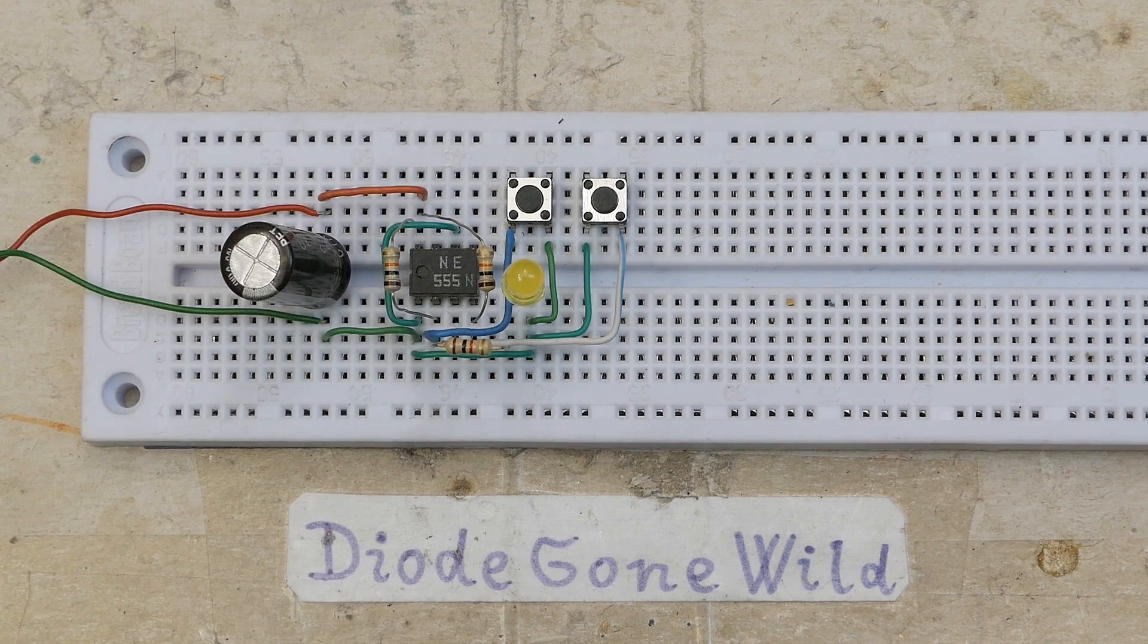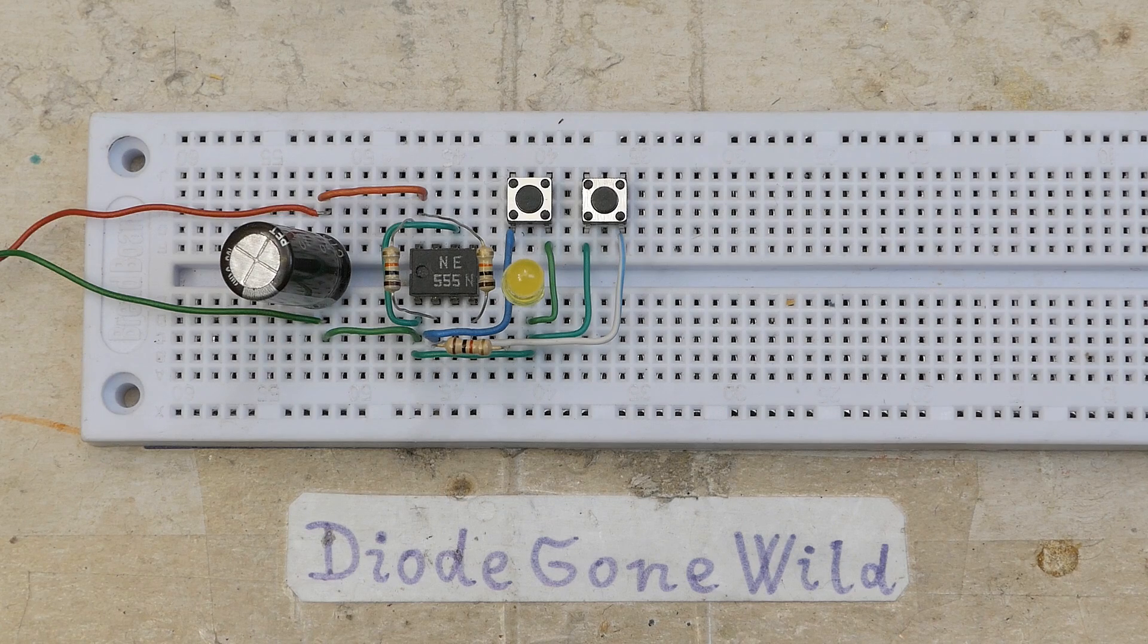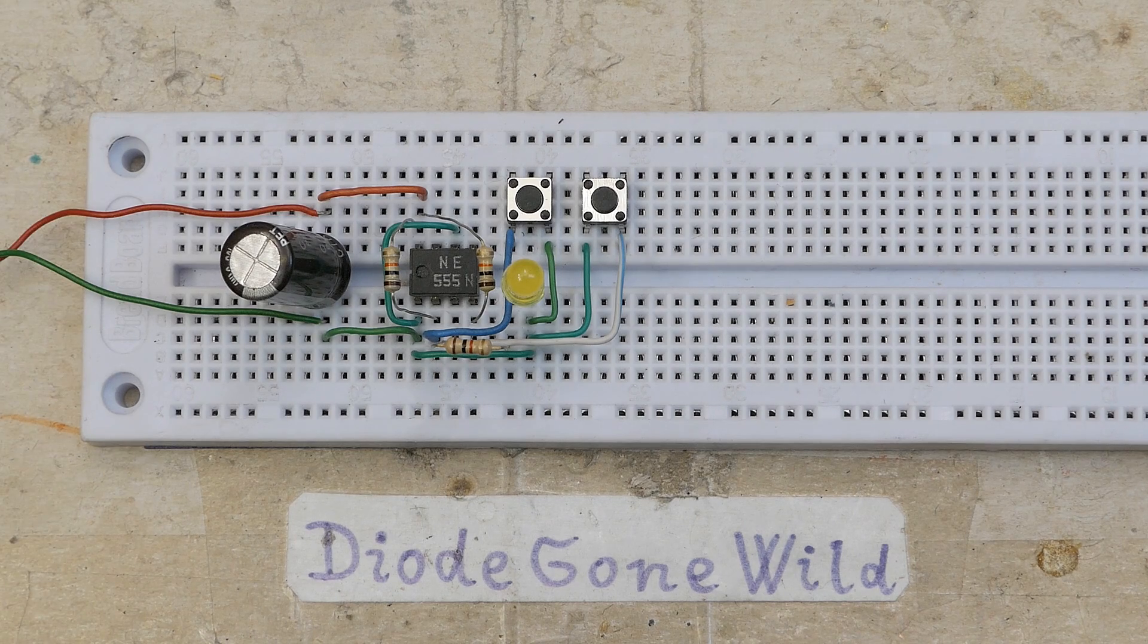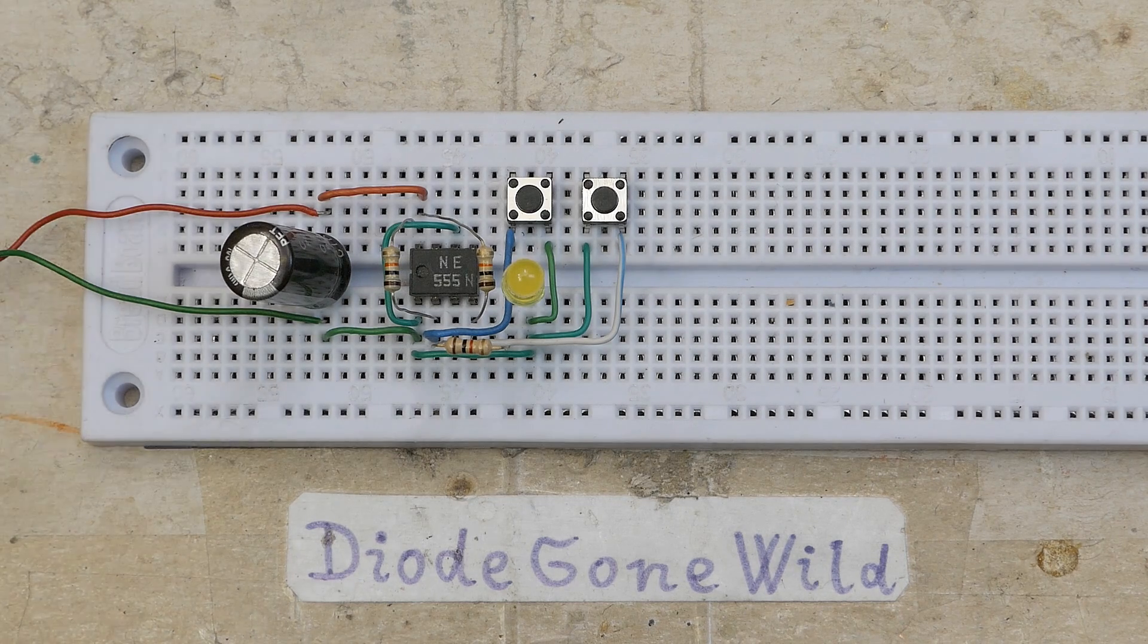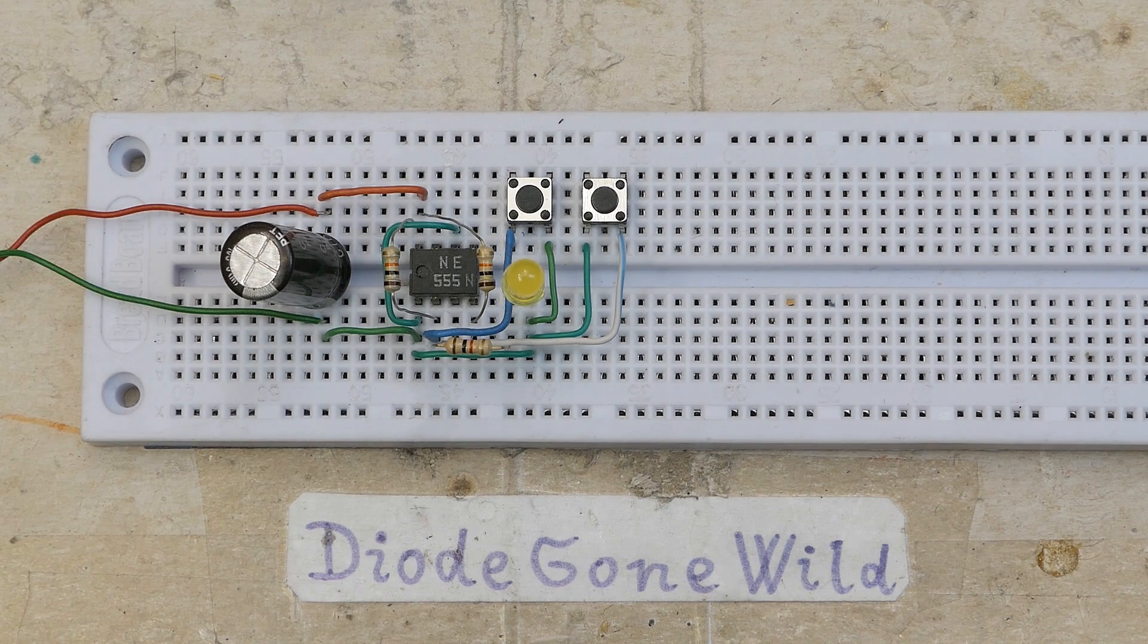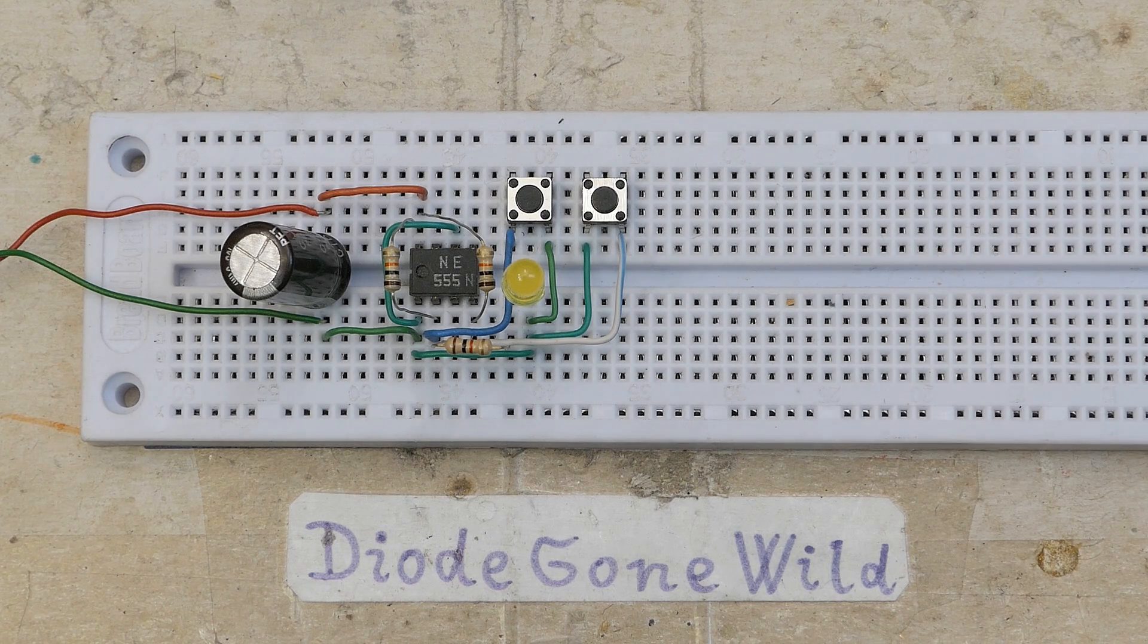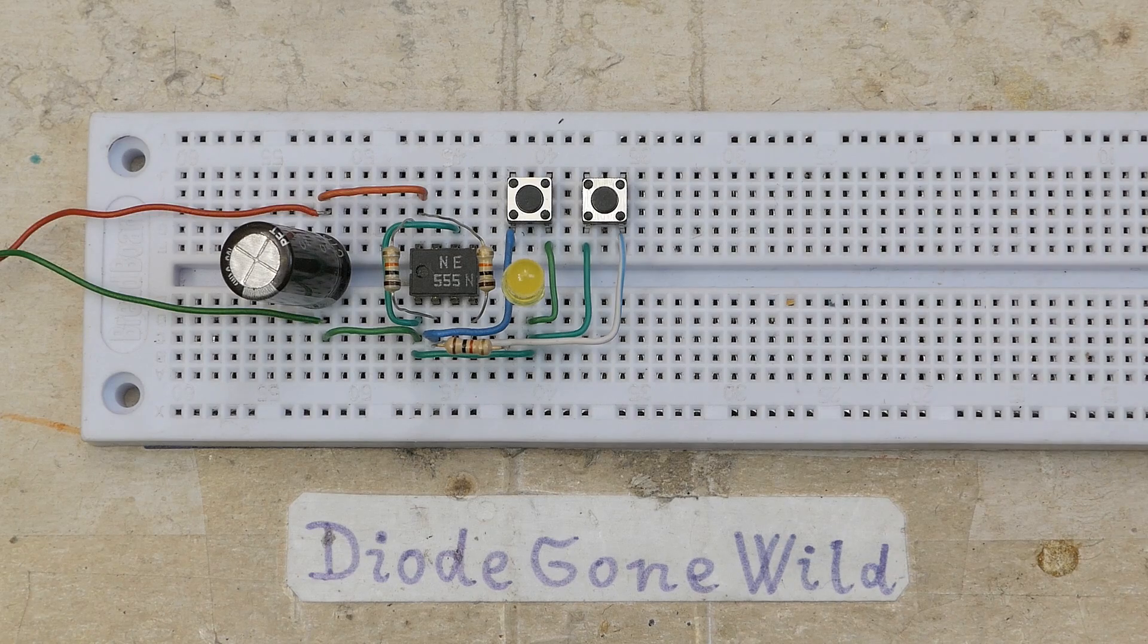So today, the second episode of my series about the 555 chip. In the first episode I explained the function of all the pins of this chip and I've shown some examples of oscillating or astable circuits like a buzzer, a siren, and an LED blinker. And today let's take a look at a bistable circuit, a circuit that doesn't oscillate but it's stable in two states.